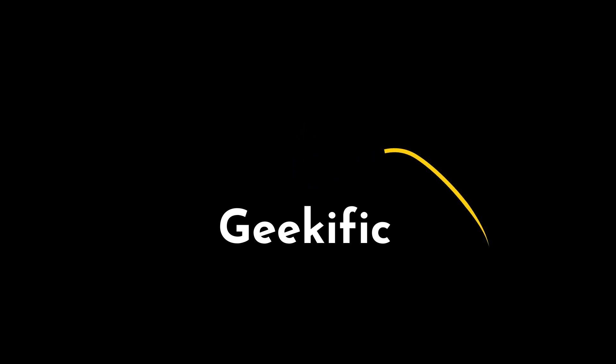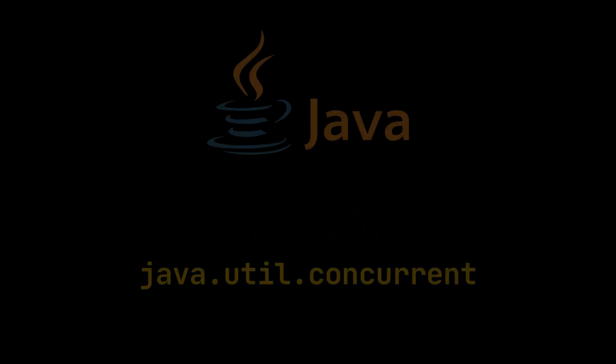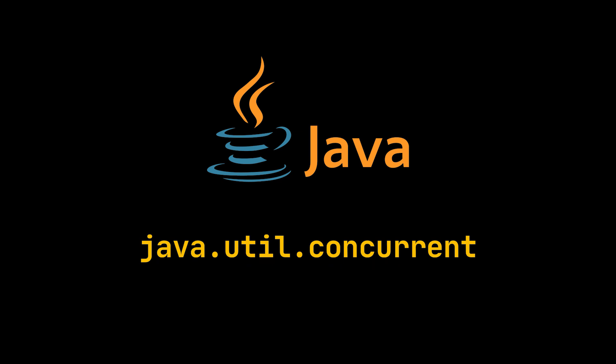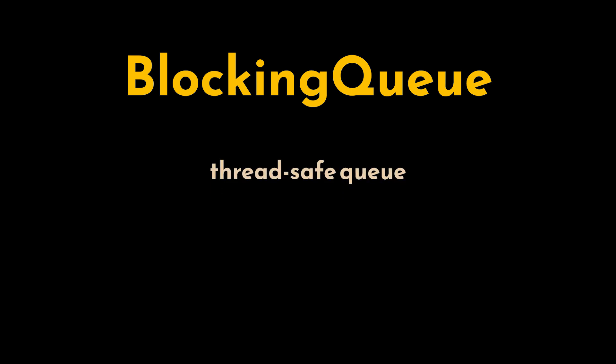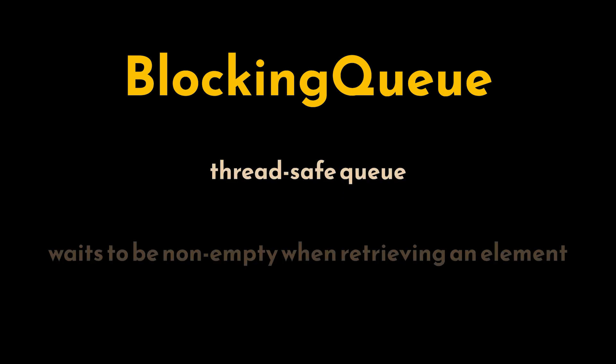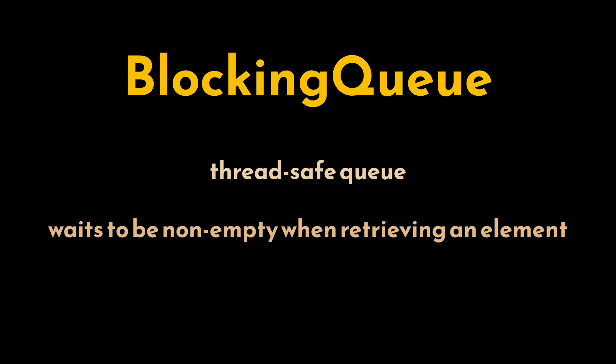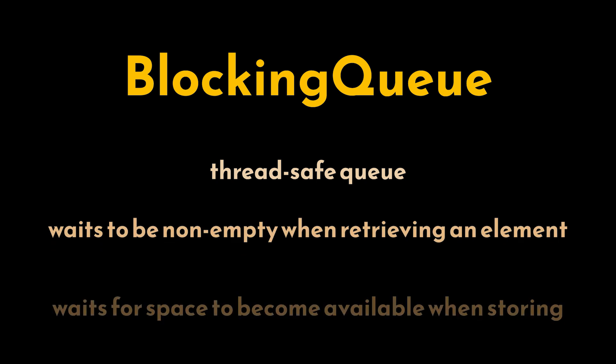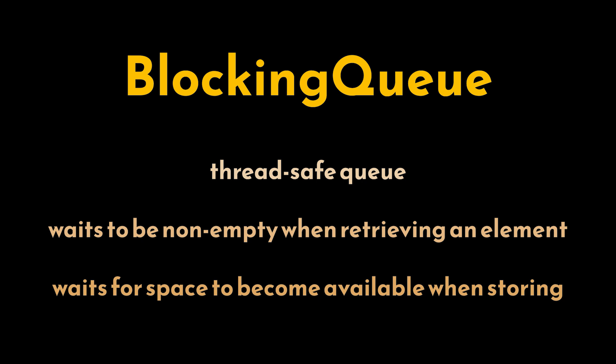What's up geeks and welcome to the channel. The java.util.concurrent package provides a rich set of utilities for dealing with concurrency and multi-threading. One of the most important components within this package is the BlockingQueue interface. It represents a thread-safe queue that supports operations that wait for the queue to become non-empty when retrieving an element and wait for space to become available when storing an element.